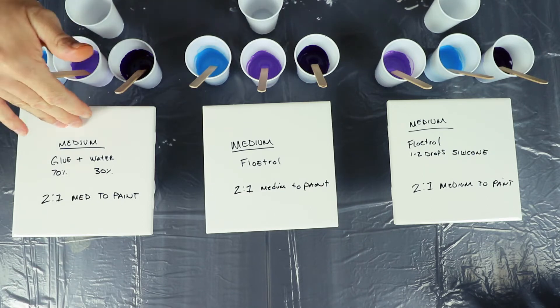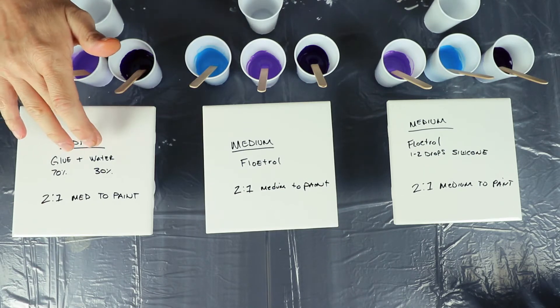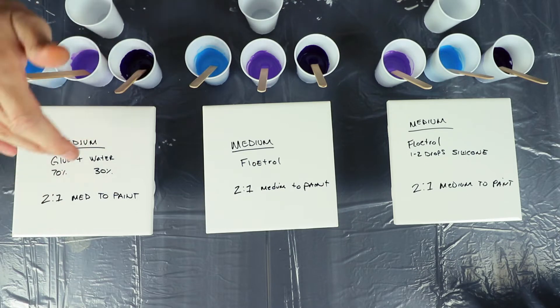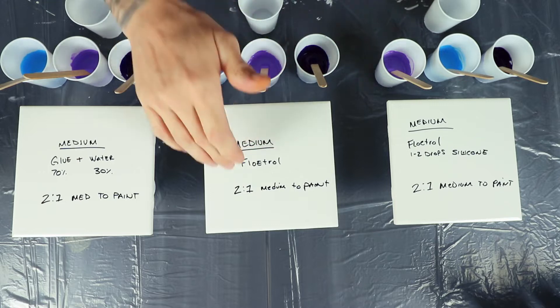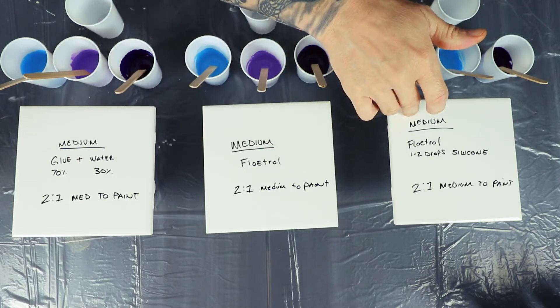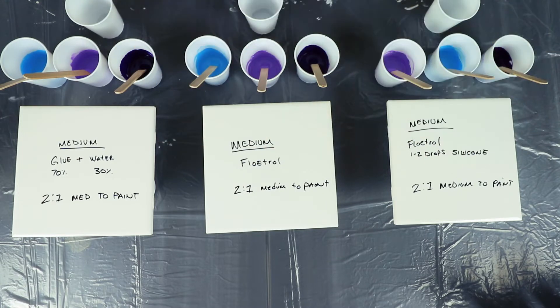This medium is going to be 70% glue, 30% water mixed at a two to one medium to paint ratio. This one is just going to be Floetrol mixed again at two to one, and this one's going to be Floetrol with silicone at two to one.